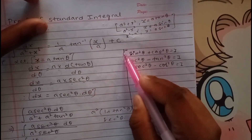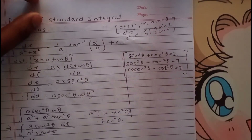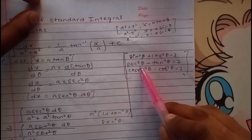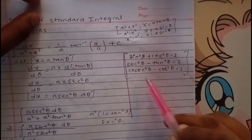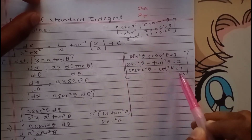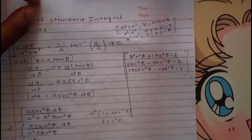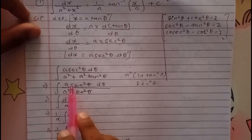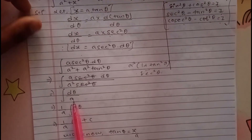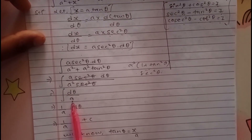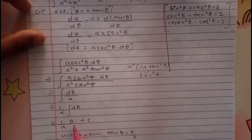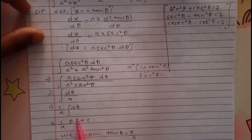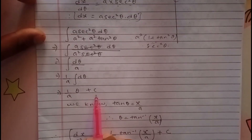From class, we know the identity: 1 plus tan²θ equals sec²θ. So the denominator a² plus x² becomes a²·sec²θ. The sec²θ terms cancel. A is constant and comes outside. We integrate d theta, which gives us theta. Just as integration of dx gives x, integration of dθ gives θ, plus c.